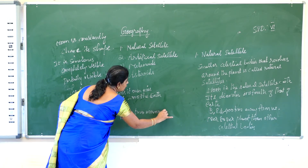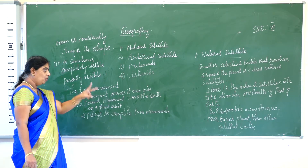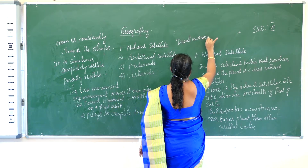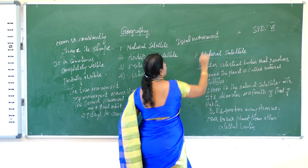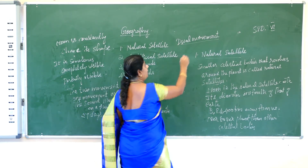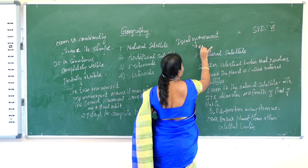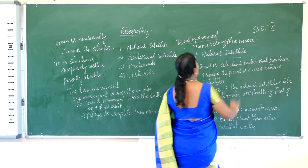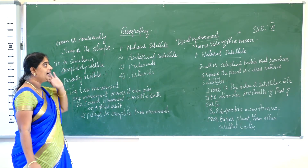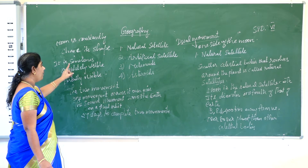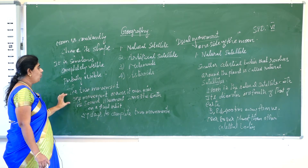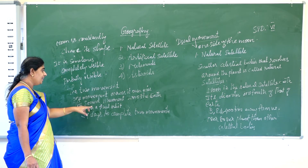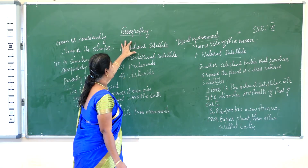How many days does it take? It takes 27 days to complete its two movements. Because of this dual movement, we can only see one side of the moon. That is why the moon appears to constantly change its shape during the night. One movement is across its own axis and the second movement is across the earth on a fixed orbit. This is about the natural satellite.